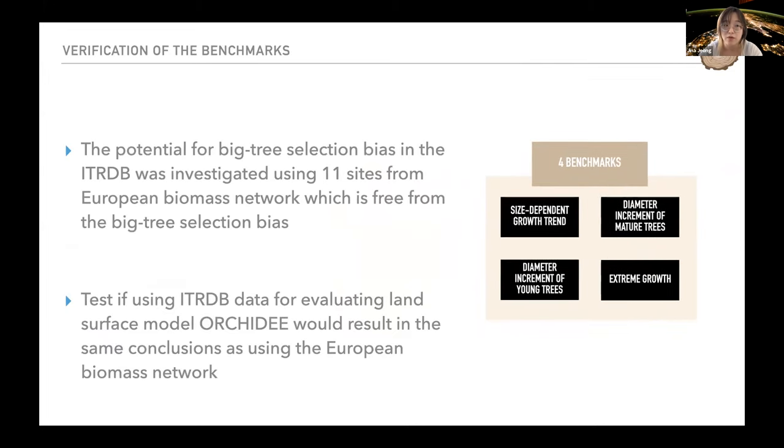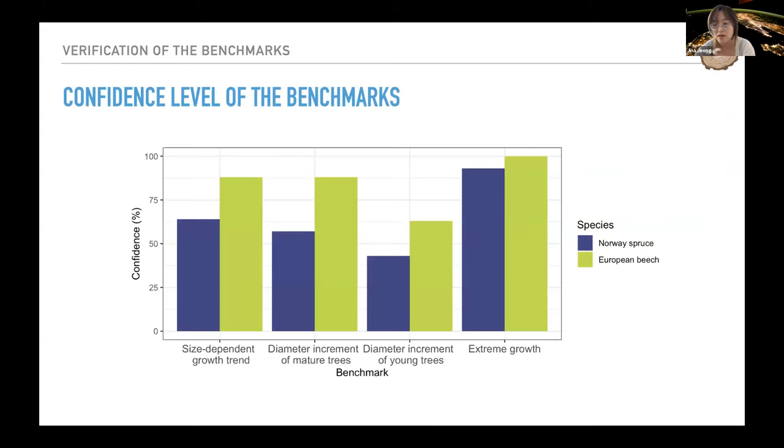Today, I briefly show the verification of the benchmarks. The potential for big tree selection bias in the ITRDB was investigated using 11 sites from European Biomass Network, which is free from the big tree selection bias. We tested if using ITRDB data for evaluating land surface model, resulting in the same conclusion as using the European Biomass Network. Briefly speaking, the benchmark against extreme growth showed the highest confidence. Benchmarking the size-dependent growth trend, and the ring increment of mature trees was relatively insensitive to big tree selection bias. But care should be taken when using ITRDB data to benchmark the growth of young trees, as only 50% of test cases were consistent.